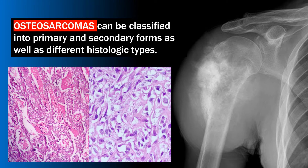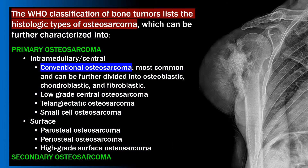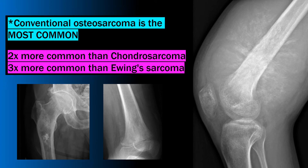Osteosarcomas can be classified into primary and secondary forms as well as different histologic types. The World Health Organization classifies these different types based on factors such as location within the bone. Of all the different types, primary conventional osteosarcomas are the most common, being twice as common as chondrosarcomas and three times more common than Ewing's sarcoma.